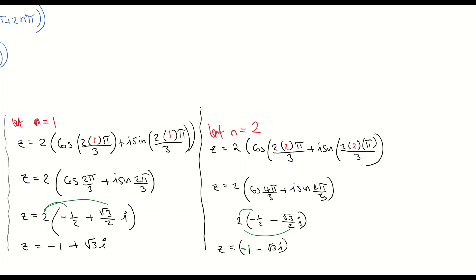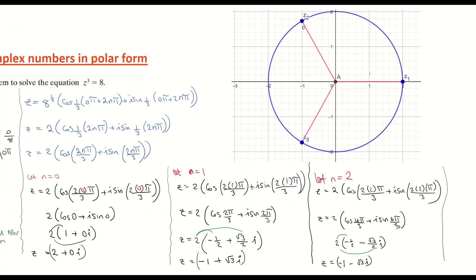Bringing back the diagram, our three roots are: z1 = 2 + 0i (on the positive real axis), z2 = −1 + √3 i, and z3 = −1 − √3 i. Those are the three solutions to the equation z³ = 8.